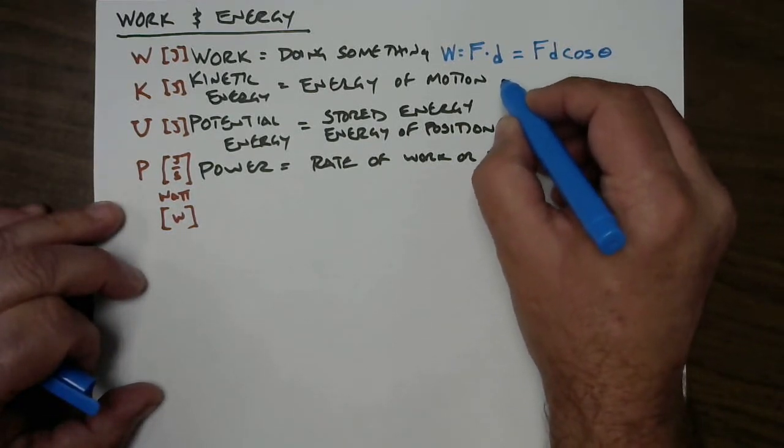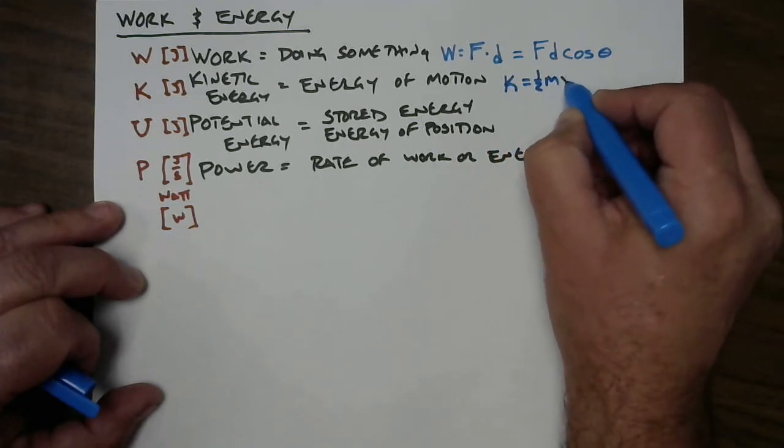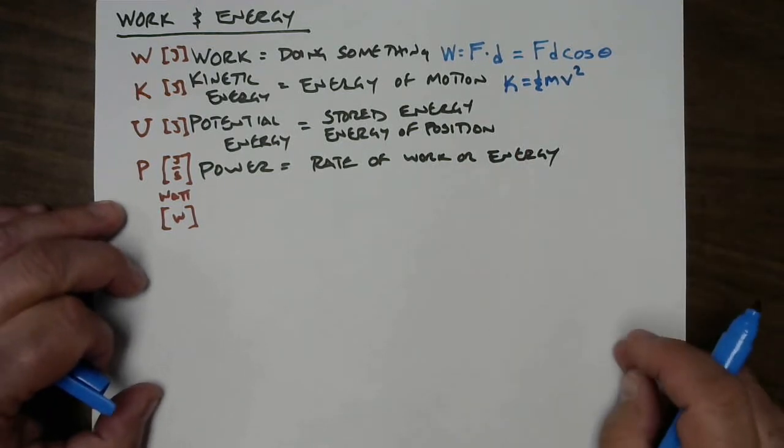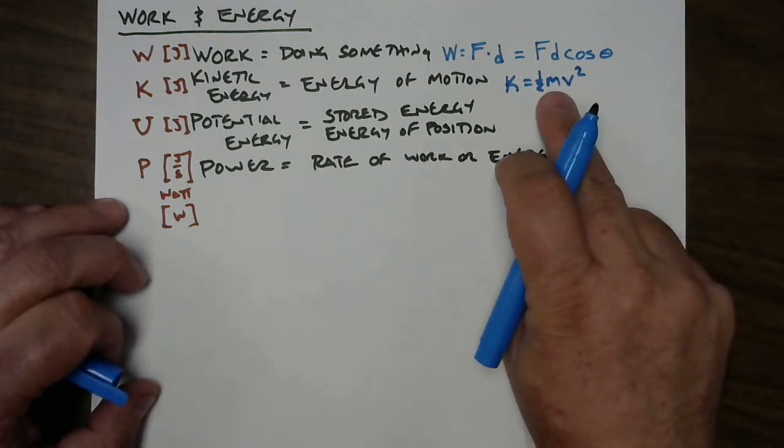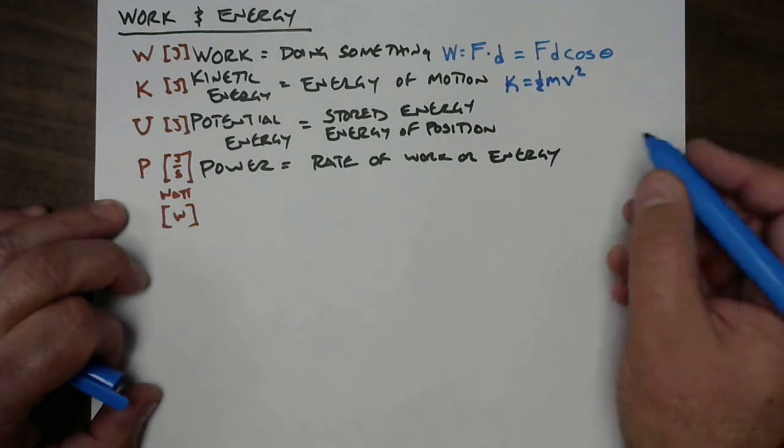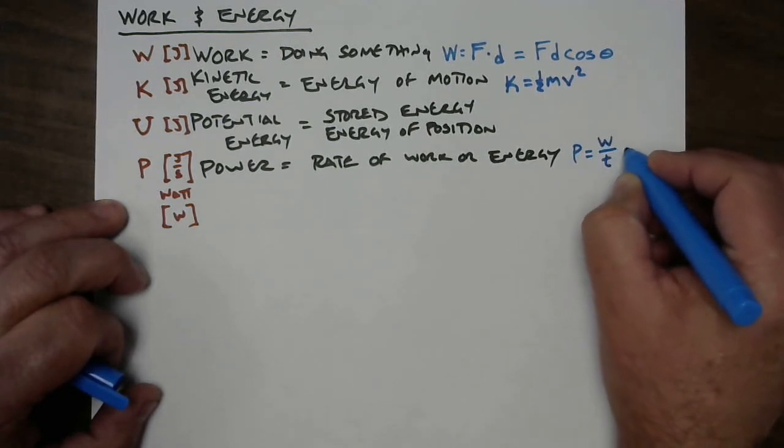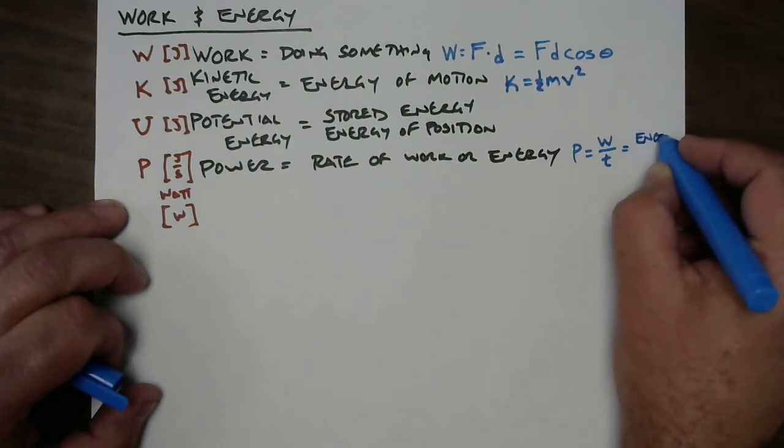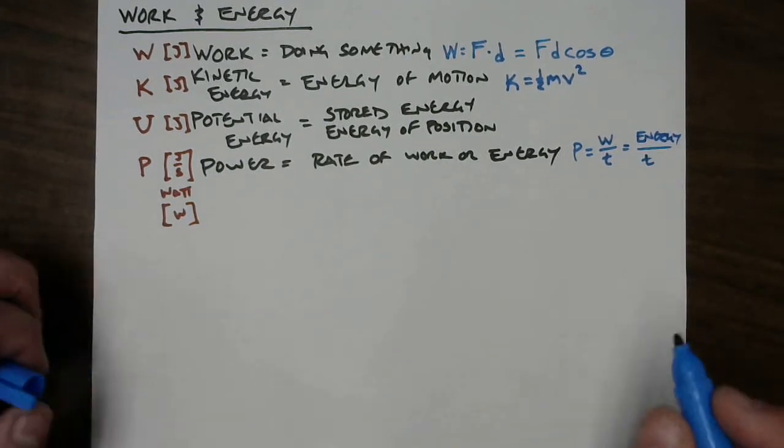Kinetic energy has got one recipe, one half of the mass of the object times its velocity squared. Later we're going to discover there's another quantity that has mass and velocity in it called momentum, but this recipe has mass, one helping of mass, and two helpings of velocity. Velocity is very important. And power is going to be work divided by time or any other kind of energy that you have divided by time.